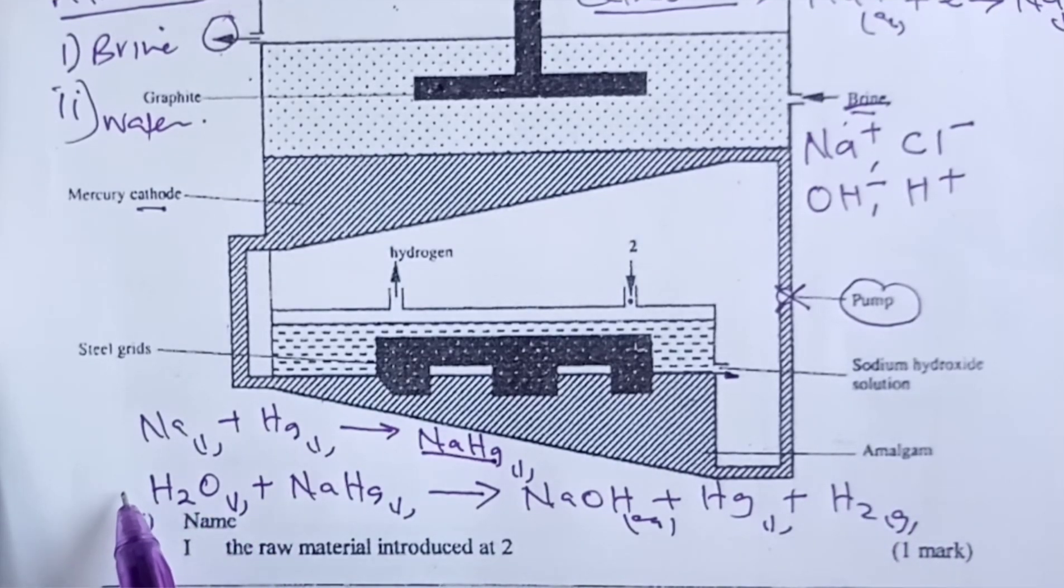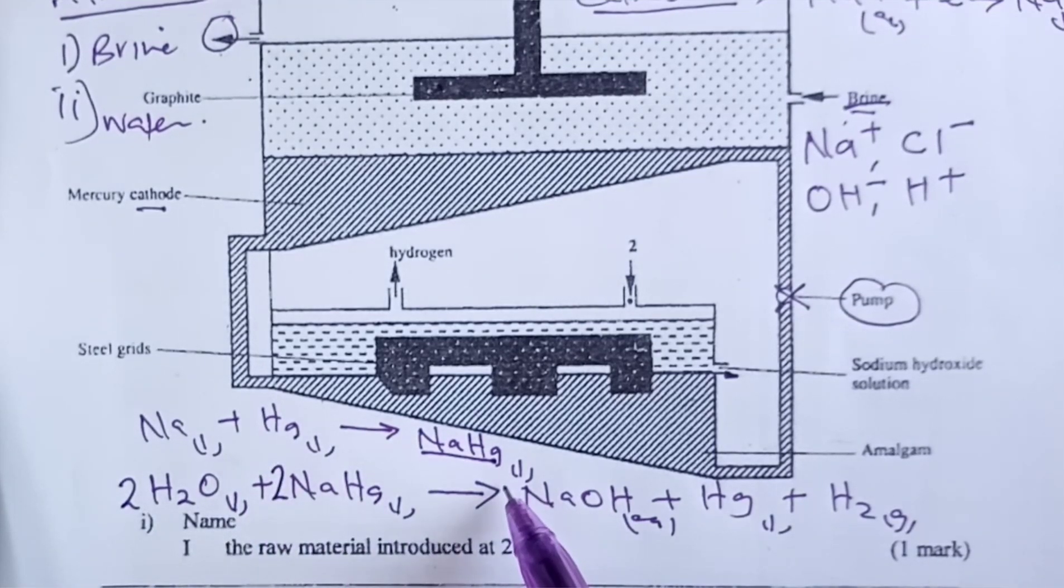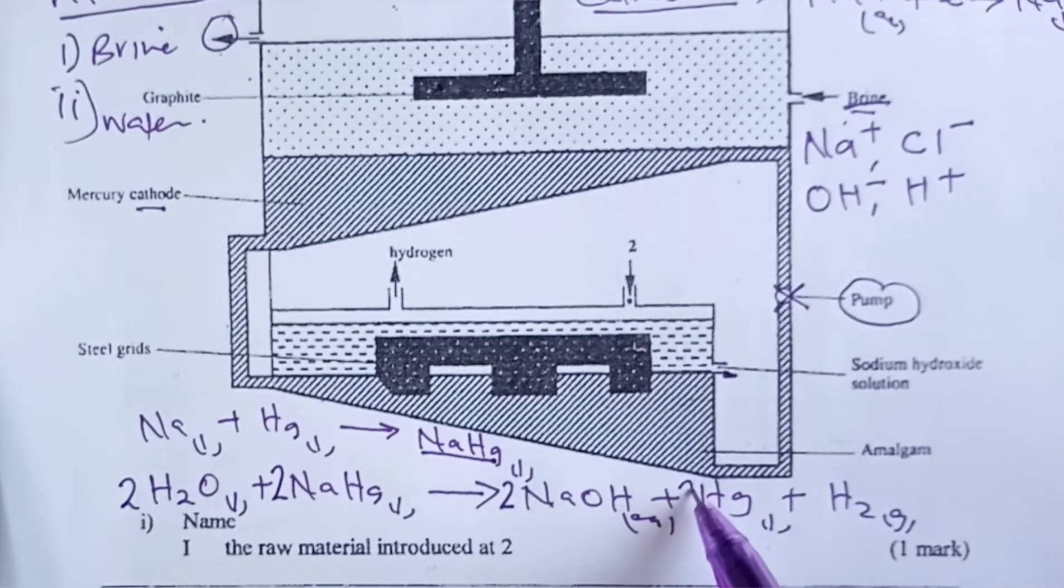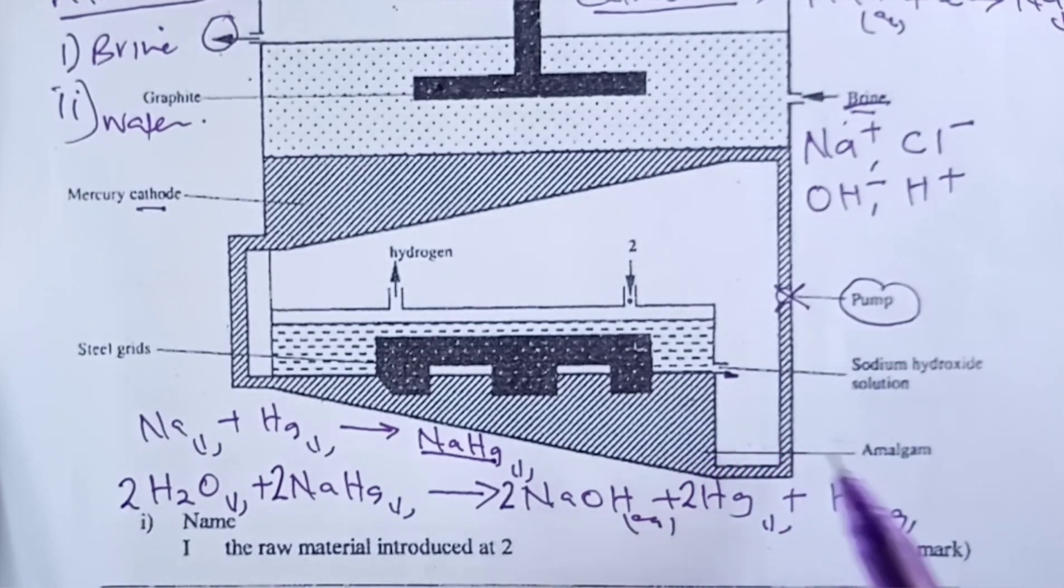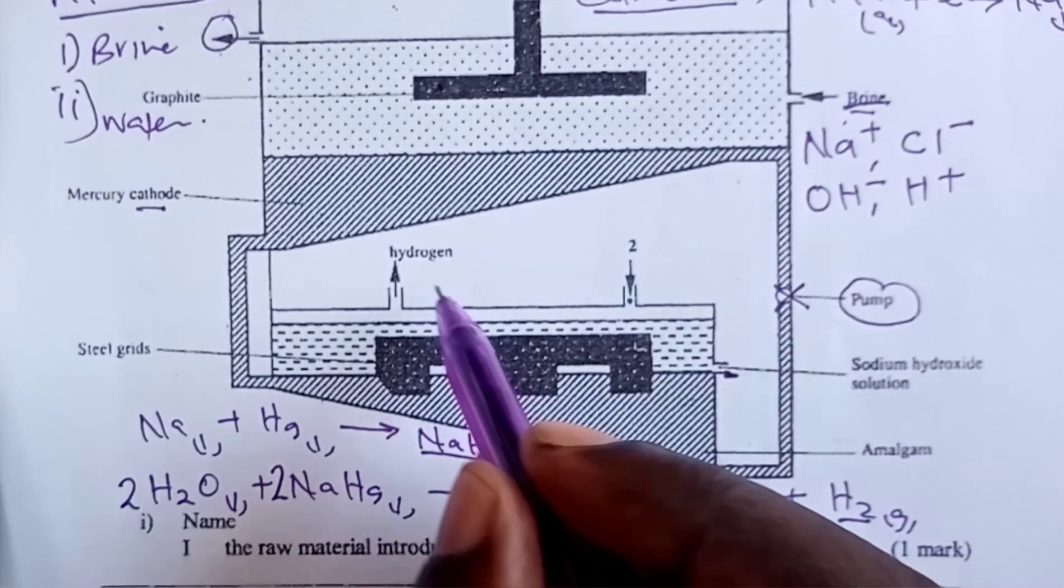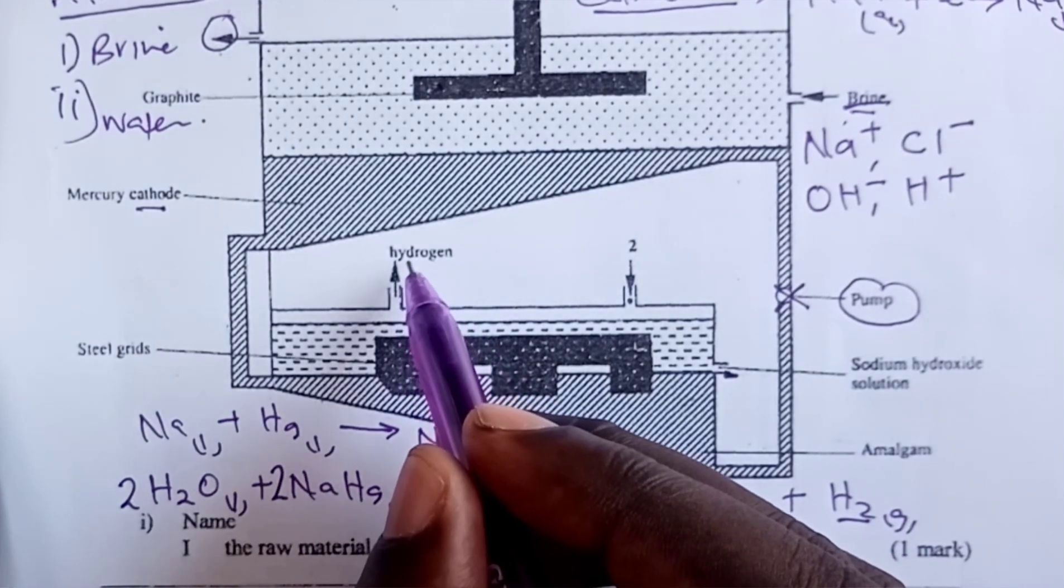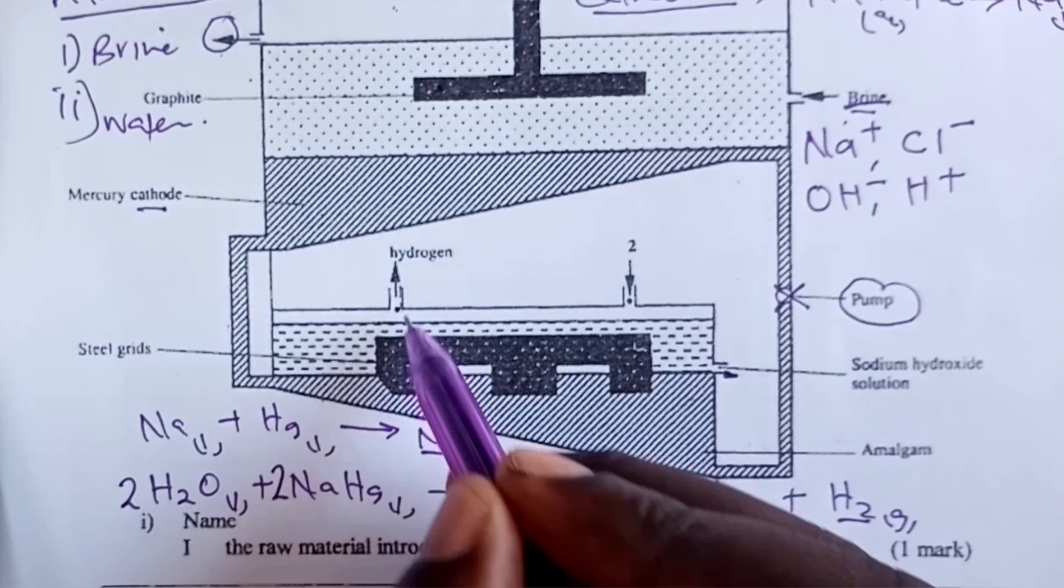We balance with a two on water, a two on our sodium mercury amalgam, a two on sodium hydroxide, and a two on mercury.